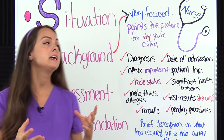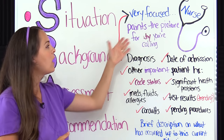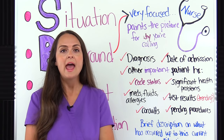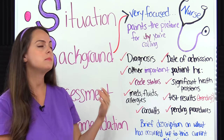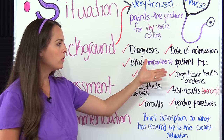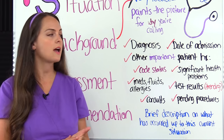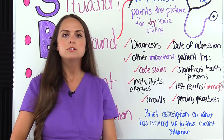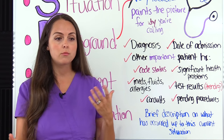The background part of the communication is going to be very focused, and its goal is to paint a picture for the listener for why you are calling by providing a brief description of what has occurred with that patient up to the current situation. You can transition into background by going into the patient's diagnosis — the patient was admitted with whatever diagnosis on such and such date. Then include important patient information tailored to why you are calling: the patient's code status, any significant health problems related to the current situation, and relevant health history — for example, if they're having cardiac problems, mention prior heart caths and results, or history of certain rhythms.